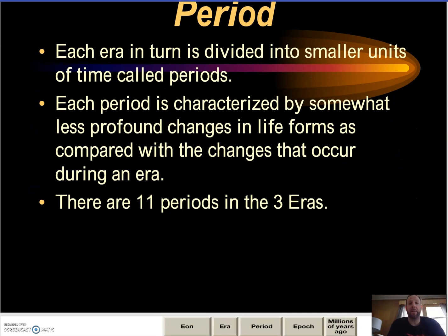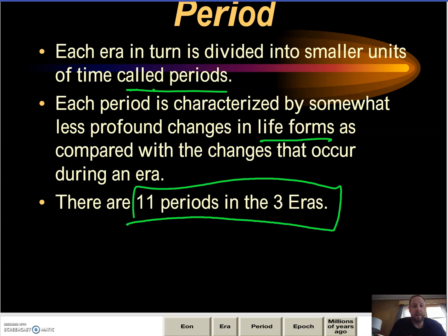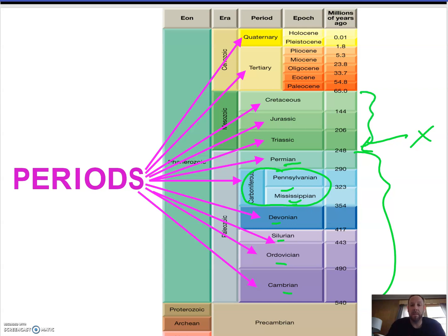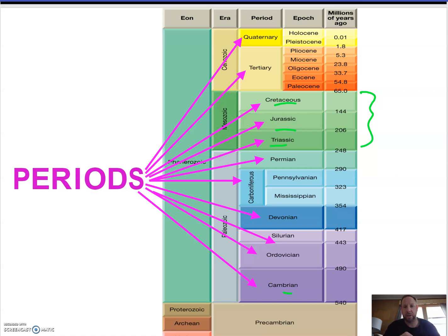Each era is divided into periods — smaller chunks categorized by different life form changes compared to the prior period. There are 11 periods across the three eras. In the Paleozoic we have the Cambrian, Ordovician, Silurian, Devonian, Carboniferous — which is subdivided into the Pennsylvanian and Mississippian — and ending with the Permian, followed by an extinction. The Mesozoic — probably more familiar terms — starts with the Triassic, the Jurassic, and the Cretaceous, ending with the extinction of the dinosaurs 65 million years ago.